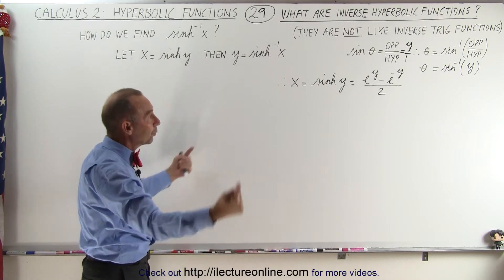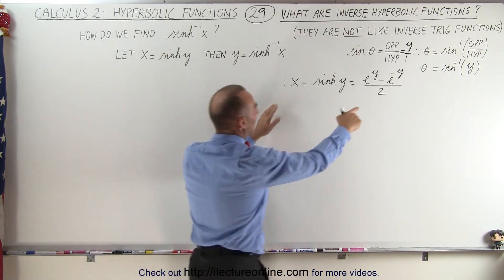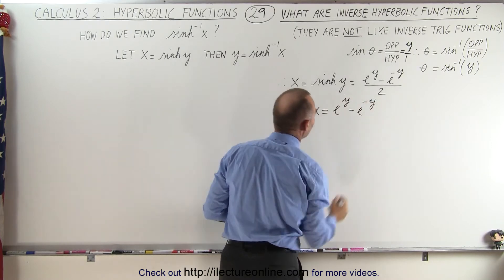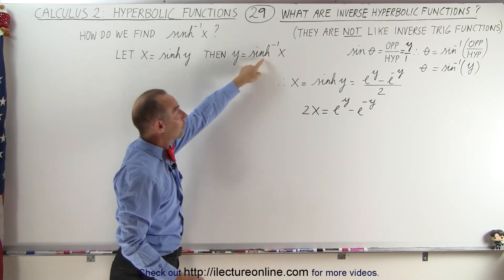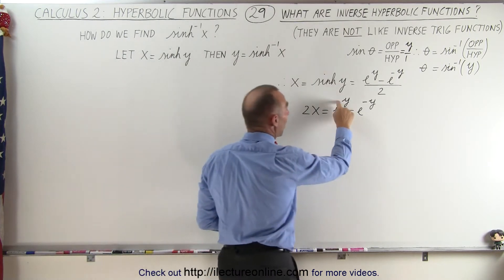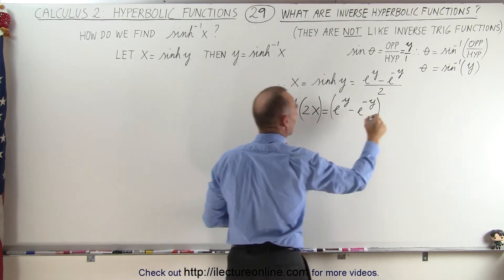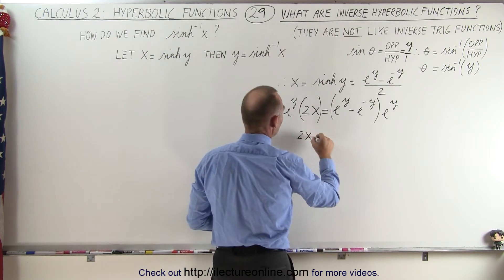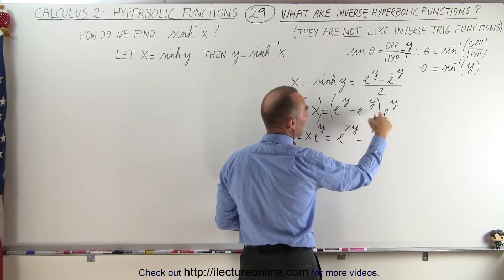To find the inverse we're going to exchange x and y in the equation and then solve for y. We bring the 2 over so we end up with 2x is equal to e to the y minus e to the negative y. When we find y, that's going to be equal to the inverse hyperbolic sine of x. Now we use a little trick — since we see e to the y and e to the negative y, we multiply both sides by e to the y to simplify. On the right side we get e to the 2y minus 1, since e to the negative y times e to the y equals 1.